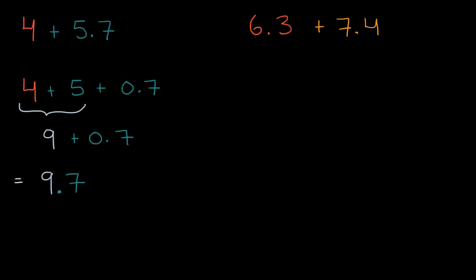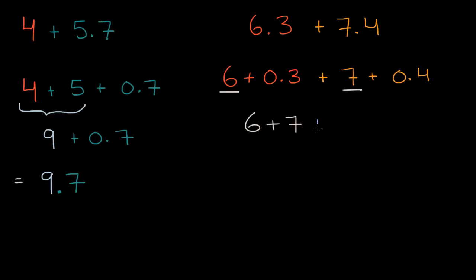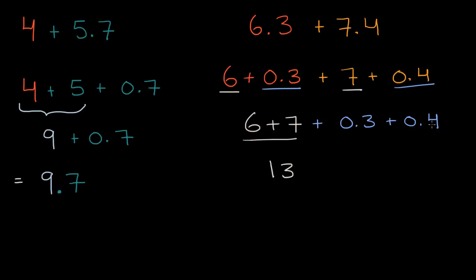My brain does it the same way — I break up the whole numbers and the decimals. There are many different ways of adding decimals, but this is just one way that seems to work, especially for decimals like this. So we could view this as six and three tenths — breaking up 6.3 into six plus three tenths — plus seven and four tenths, which is seven plus four tenths. Then you can view this as six plus seven, plus three tenths plus four tenths. If you add the ones, you have six ones and seven ones, that's going to be equal to 13. And three tenths and four tenths — if you have three of something and add four of that, that's going to be seven tenths.